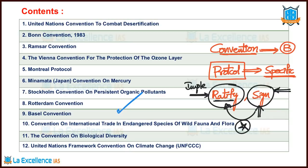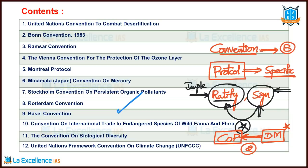And there is one more word called COP — Conference of Parties. The member countries are called parties to the conference. This is a decision making body. Each convention has a Conference of Parties. They meet frequently — maybe once every two years, every year, or once every three years — and they take decisions. That's about COP.